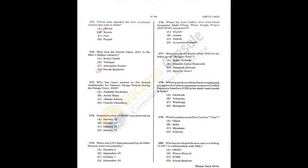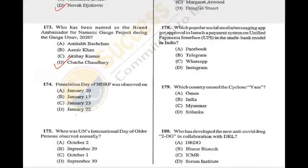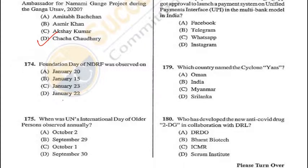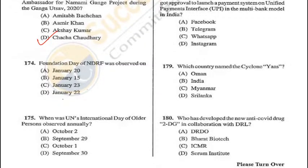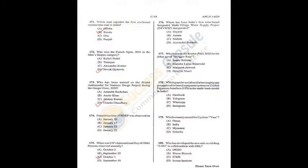Question 174: NDRF Foundation Day was celebrated on January 20 — A is the correct answer. Question 175: United Nations International Day of Older Persons is observed on October 1st — C is the correct answer. Q174 = A.